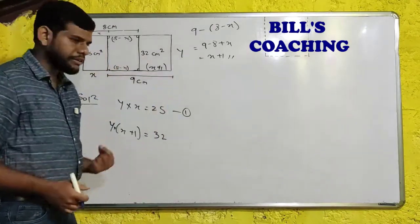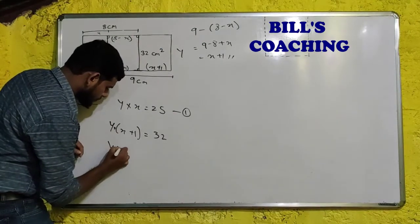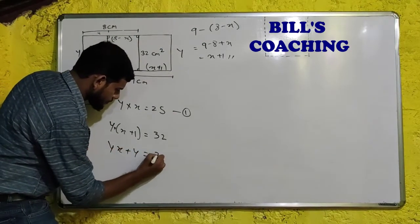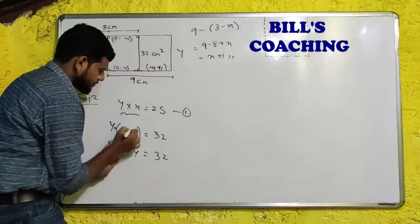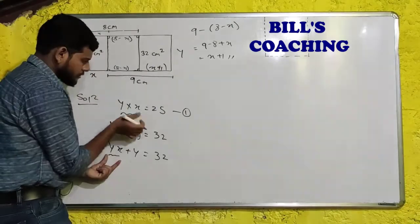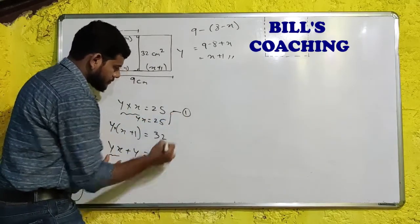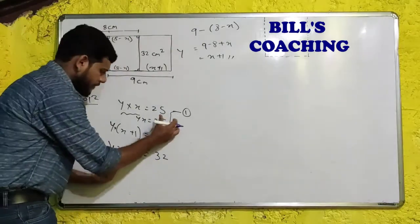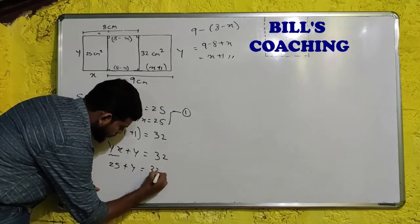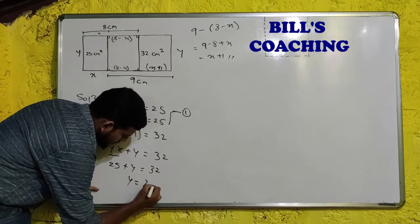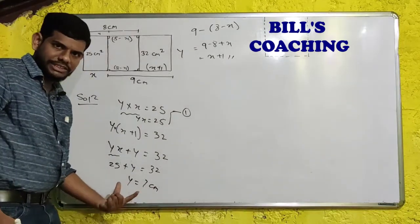We will solve this part now. We will say y multiplied by (x plus 1) will be equal to 32. Right? Length into breadth. We will open this bracket. It becomes yx plus y is equal to 32. Can we substitute this y over here? Yx plus y is equal to 32. Actually this is yx. Yx is 25. So we can say yx is 25. I will substitute over here. 25 plus y is equal to 32. And bring this on this side. It will become 7 centimeters.